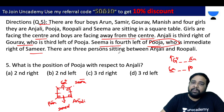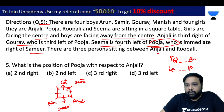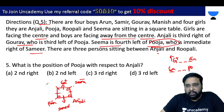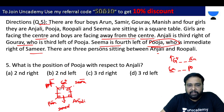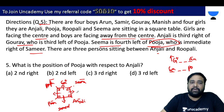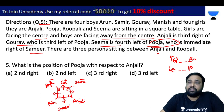There are three persons sitting between Anjali and Rupali. So Anjali and Rupali are opposite to each other in the arrangement.